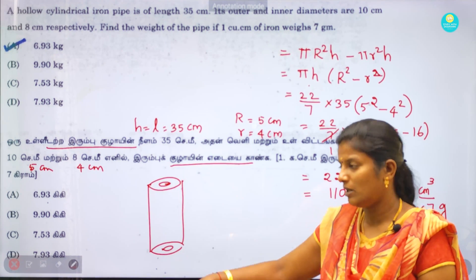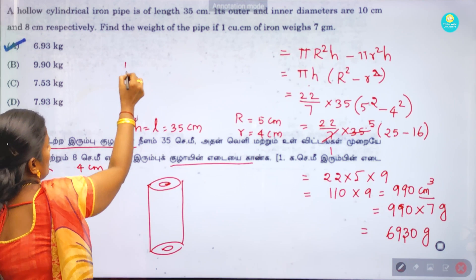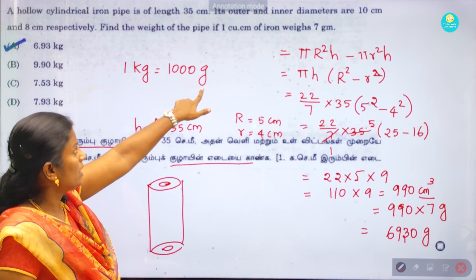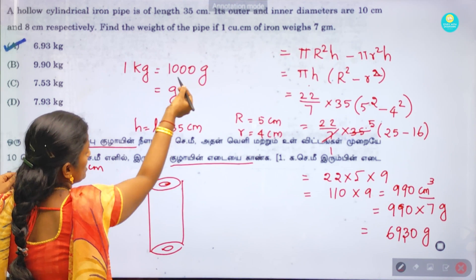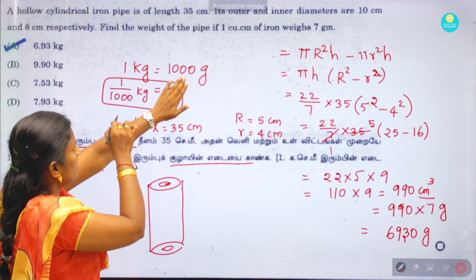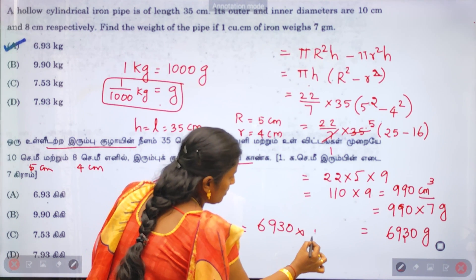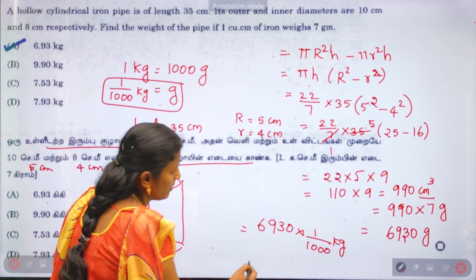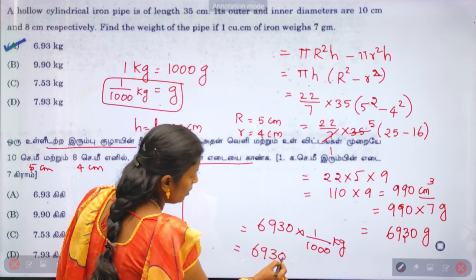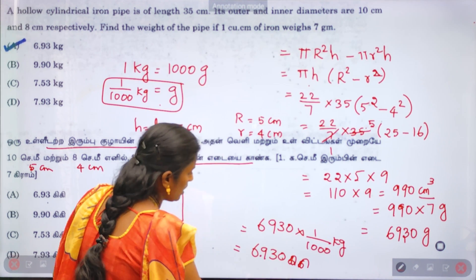Now we need to convert grams to kilograms. Since 1 kilogram = 1000 grams, we divide 6,930 by 1000, moving the decimal 3 places, giving us 6.930 kilograms.